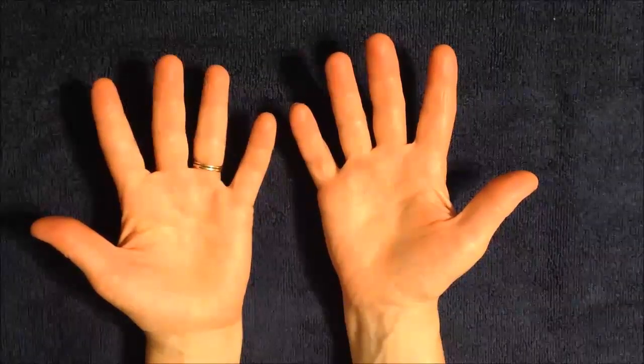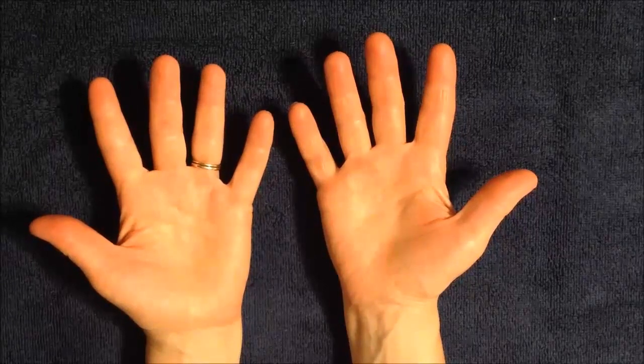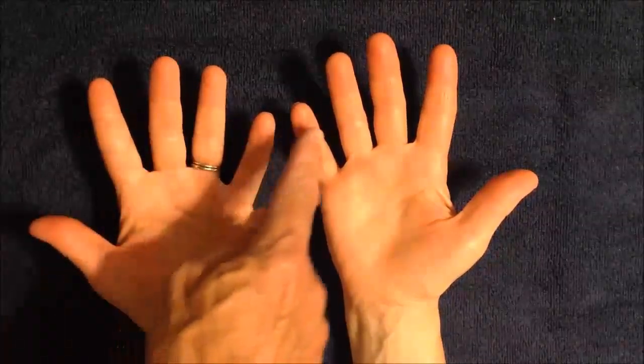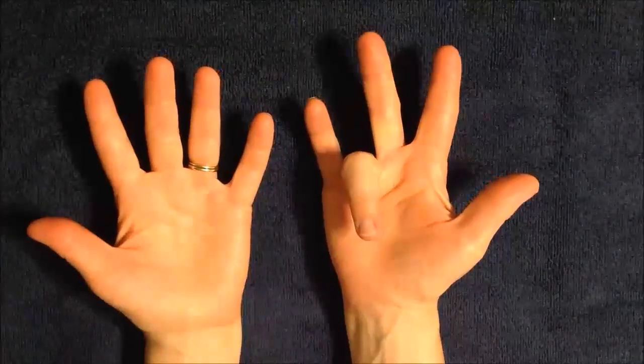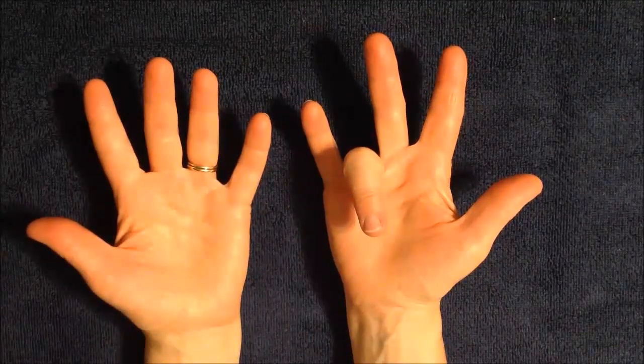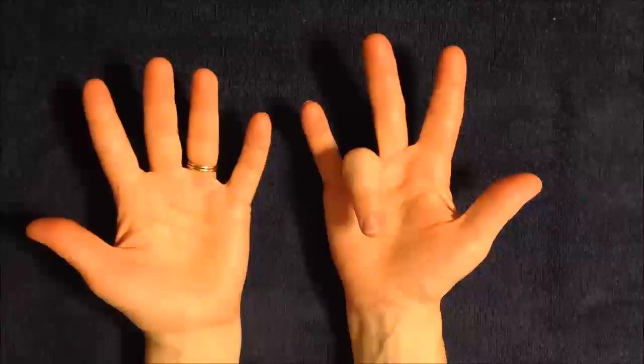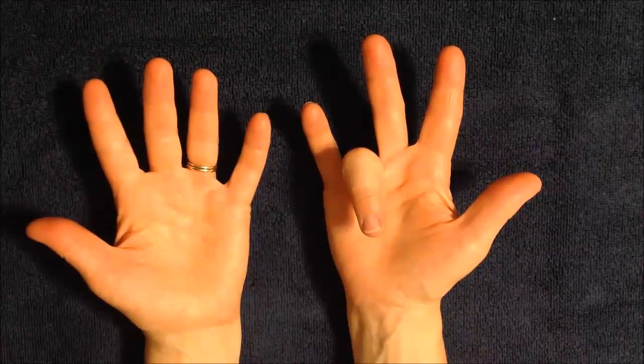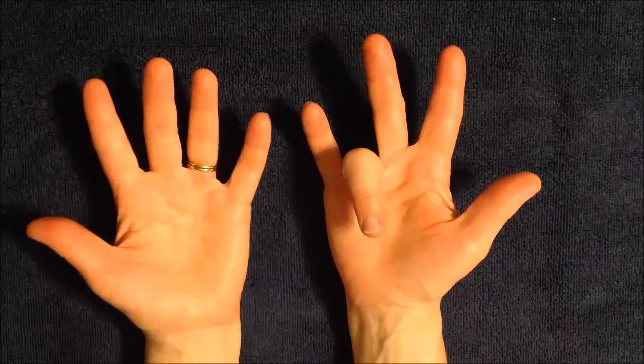Now let's do another one. Maybe 9 times 7. So we're going to count to the 7th finger and fold that one down. Take a look at the fingers to the left, which there are 6. Make 60, and to the right we have 3. So therefore, 9 times 7 equals 63.